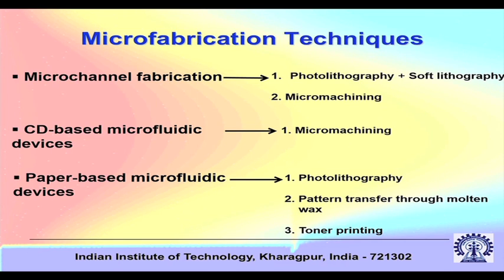When we say microfabrication, our main goal is microchannel fabrication, because that is where fluid flow takes place and where microfluidics is mainly concerned. Microchannel fabrication typically involves the classical paradigm of photolithography, soft lithography, and mechanical micromachining. We will also discuss micromachining on CD-based microfluidic devices and paper-based microfluidic devices, including pattern transfer through molten wax and toner printing.